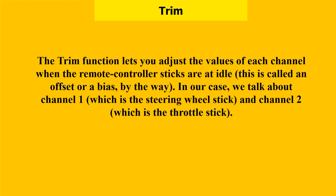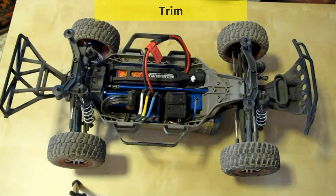The trim function lets you adjust the values of each channel when the remote control sticks are at idle. This is called an offset or a bias. In our case, we're talking about Channel 1, which is the steering wheel stick, and Channel 2, which is the throttle stick. Let's do an example of the trim function on Channel 1. The remote control is now at idle, the trim function on Channel 1 is set to 0, and as you can see, the steering wheels are directing straight — they have no bias, or in other words, they have 0 bias.